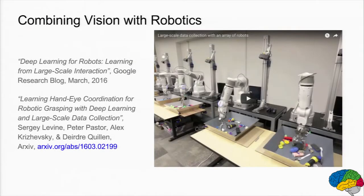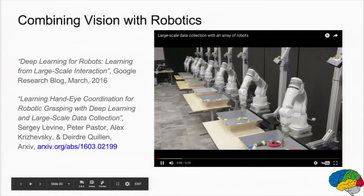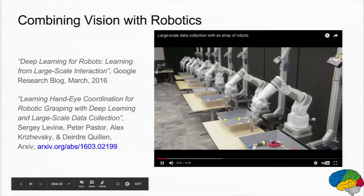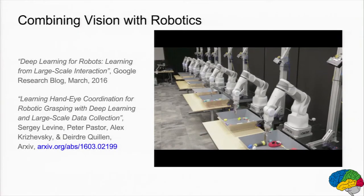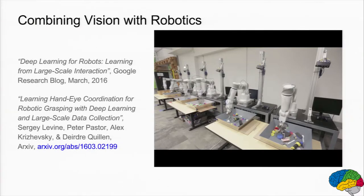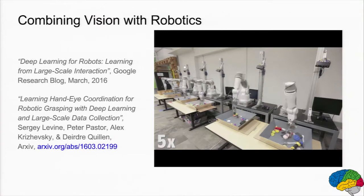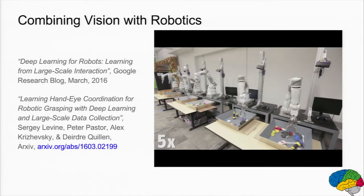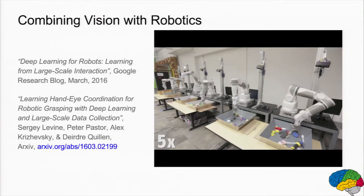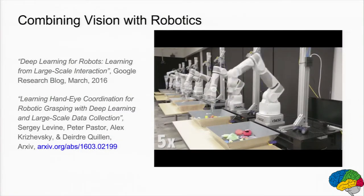There are also results in robotics, where it's much more difficult and expensive to collect training data. Here's a farm of robot arms learning to grasp specific objects and pick them up. By linking perception to movement, you can actually learn behaviors like pushing one object out of the way to grasp another. This is in very early stages, but we're excited about it.